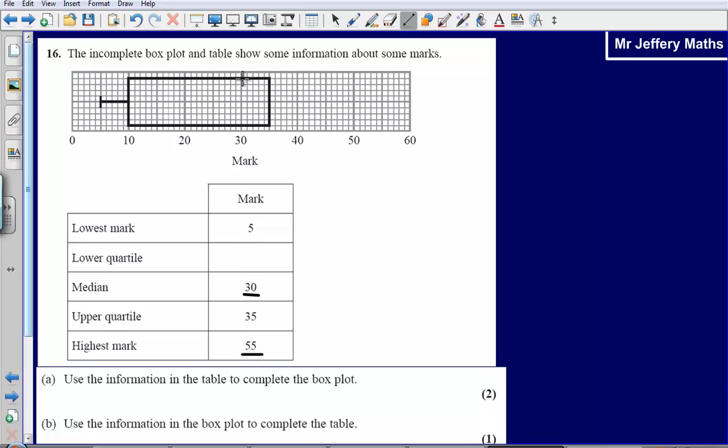So our median we just represent with a line that goes down inside the box at where we're told. So we're told that the median is 30 so we just need to draw a line at 30 inside the box. That there is representing our median.